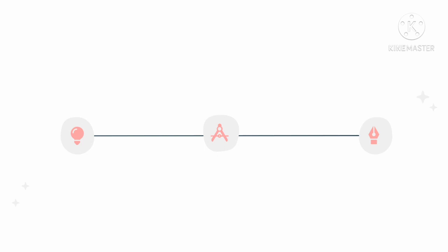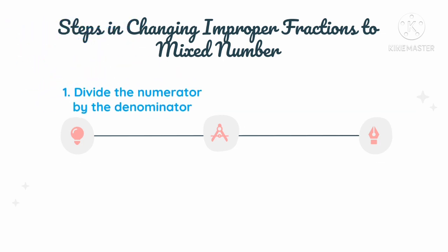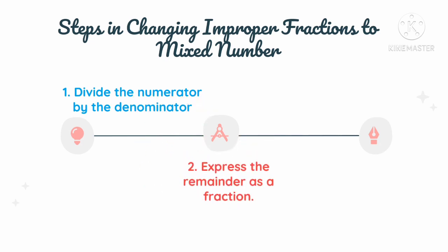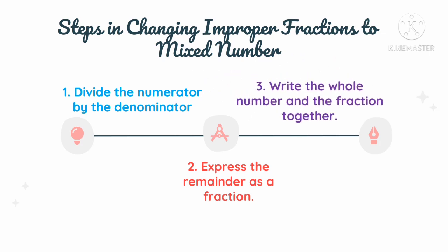Since we already know how to differentiate improper fractions from mixed numbers, here are the steps in changing improper fractions to a mixed number. First step: divide the numerator by the denominator. Then express the remainder as a fraction. And lastly, write the whole number and the fraction together.